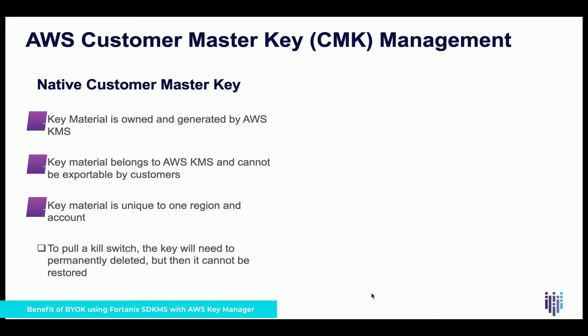Last but not least is the kill switch option. A kill switch is something you'd consider when you encounter some sort of breach happening in your account and you really have to stop your business and do some forensics. You could disable the key, but that means the key material is still living inside AWS. If you have indicators of a potential internal attack, you have to delete the key.